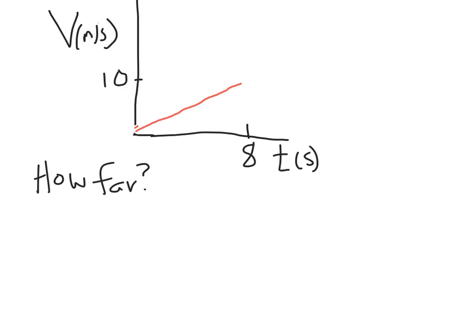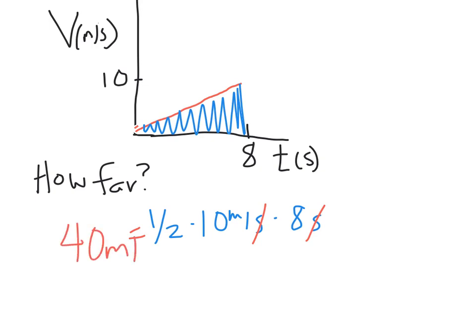Statements like how far or how much distance does it travel or what's the displacement of the object are all referring to the same thing. They want to know how many meters did it actually travel. That's the concept of the area under this curve. Because when I take velocity times time, I'm going to get a position. So, we make it a simple triangle. That's 1/2 times 10 meters per second times 8 seconds. Once my seconds cancel out, and I got 80 times 1/2, or around 40 meters. So, this object has traveled 40 meters in that 8 seconds.